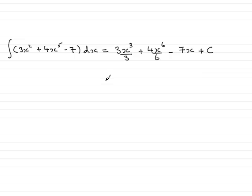All we need to do now is just tidy this up. So looking at the first term here, 3x cubed over 3, the 3's cancel. 3 into 3 goes 1, 3 into 3 goes 1, so we have x cubed.